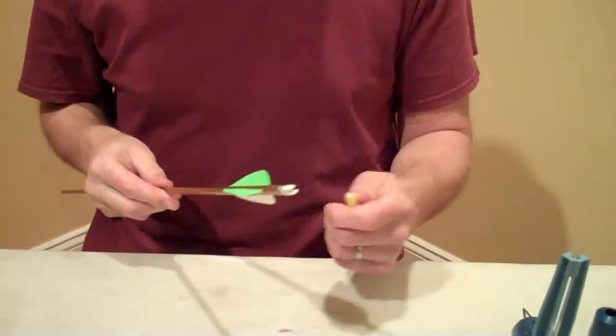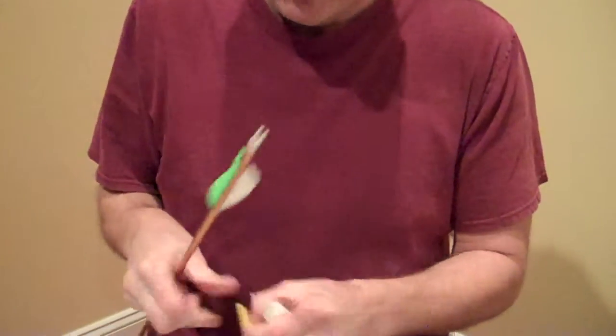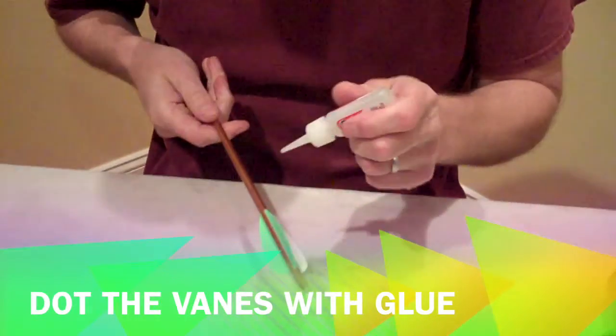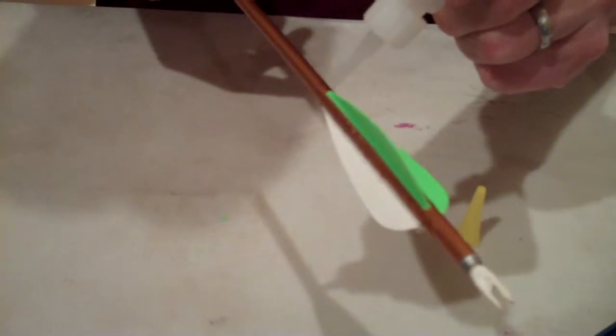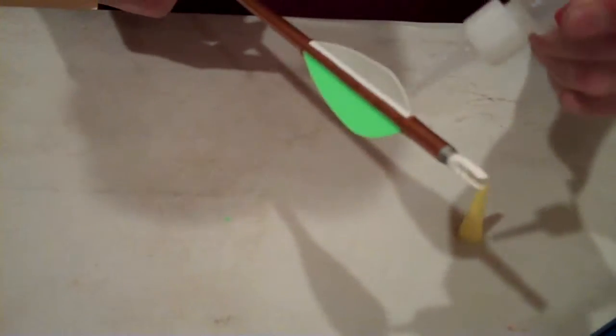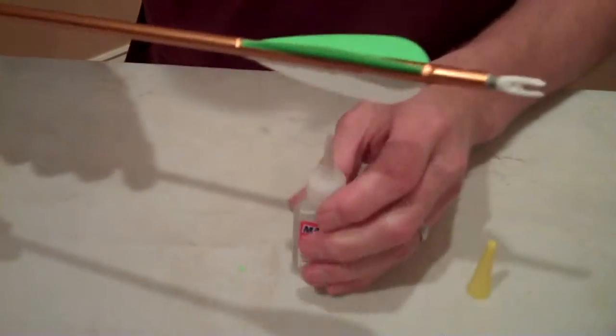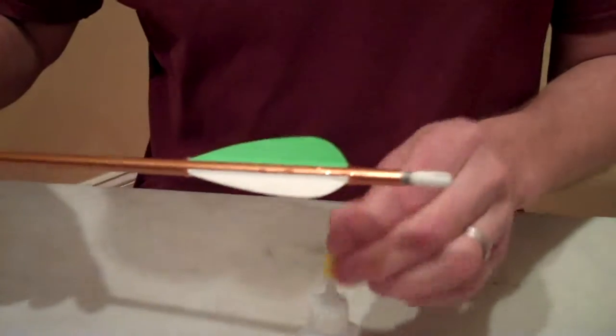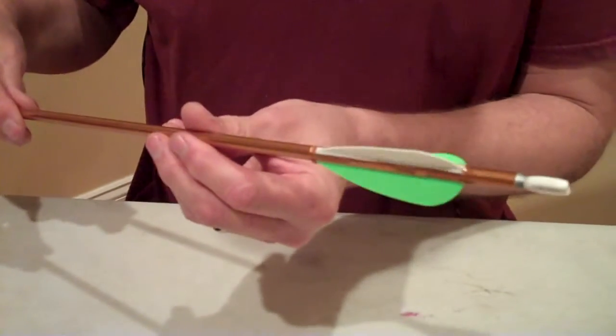At this point, what you're going to want to do is take your glue and do what we call dot the vanes. You simply put a little dot of glue along the front of each vane and the rear. This prevents the fletchings from getting stripped if it passes through screening or anything else like that. So it gives the arrow some increased durability.